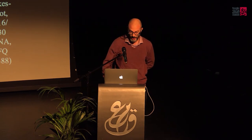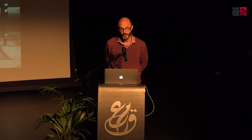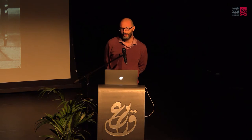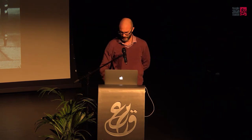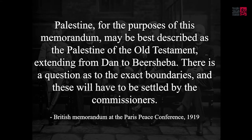This emerged at discussions that took place almost exactly a century ago, first at the Versailles Peace Conference and then the San Remo Conference in 1919 and 1920. When the British were thinking about where Palestine was, they didn't think about the Ottoman Empire, and they didn't even really think about Sykes-Picot. Here's a memorandum from the British delegation at Paris in 1919: 'Palestine, for the purposes of this memorandum, may be best described as the Palestine of the Old Testament, extending from Dan to Beersheba.' This is as typical a British attitude as you can get — the idea that it's basically the land of the Old Testament, but we don't really know where the Old Testament lands were.